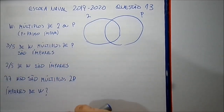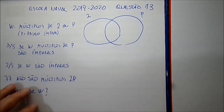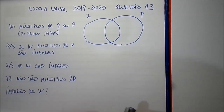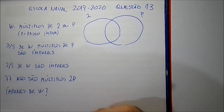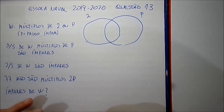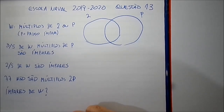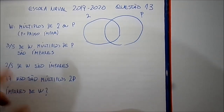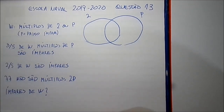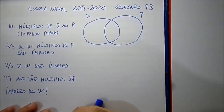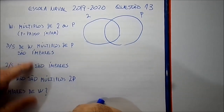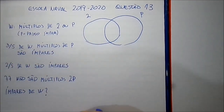Outro problema de enunciado mal redigido: ele falou que sabendo que 3 quintos de W são múltiplos de P. W é um conjunto — você não pode fazer 3 quintos de um conjunto. O certo seria falar 3 quintos dos elementos de W. Faltou a palavra 'elementos' para isso ficar mais claro. Você teria que interpretar que ele chamou 3 quintos de W como 3 quintos do número de elementos.